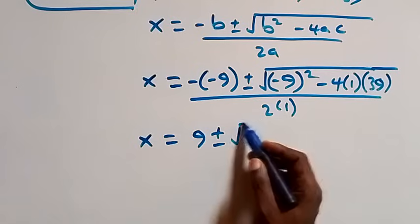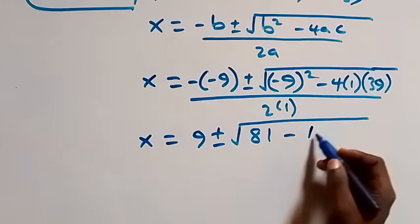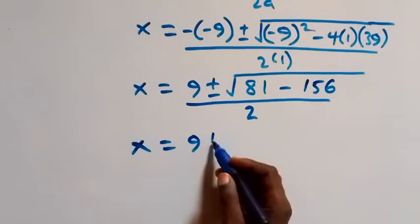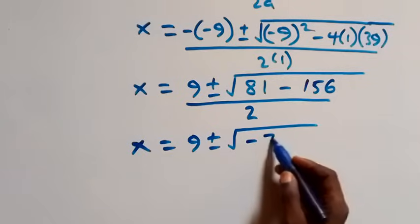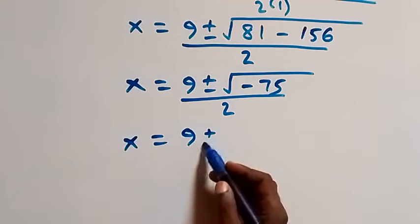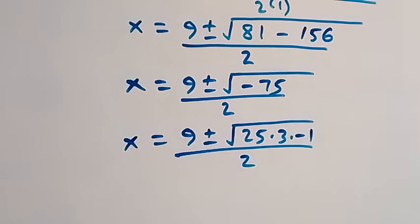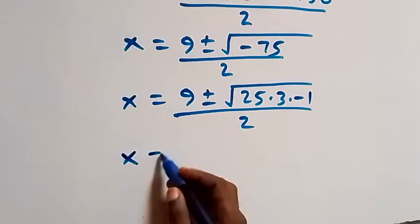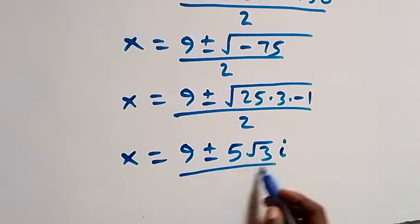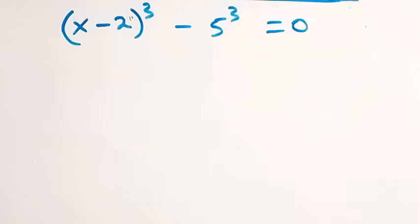So x equals 9 plus or minus square root of 81 minus 156, which is square root of minus 75, over 2. Writing minus 75 as 25 times 3 times minus 1, we get x equals 9 plus or minus 5 times root 3 times i, over 2. This gives two complex solutions from Case 1.